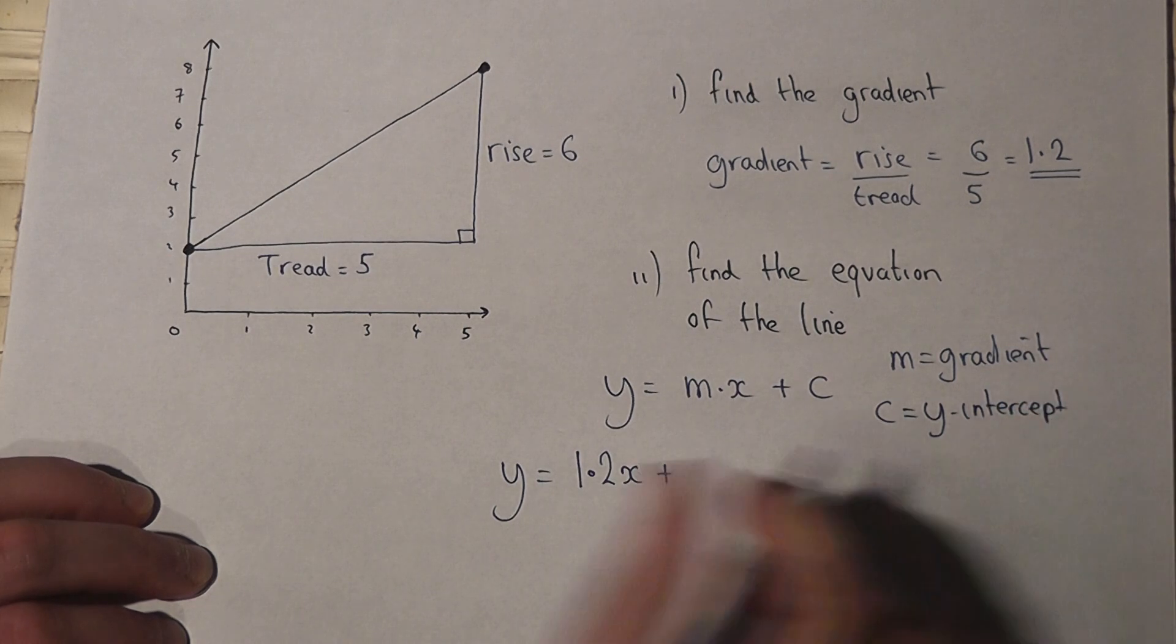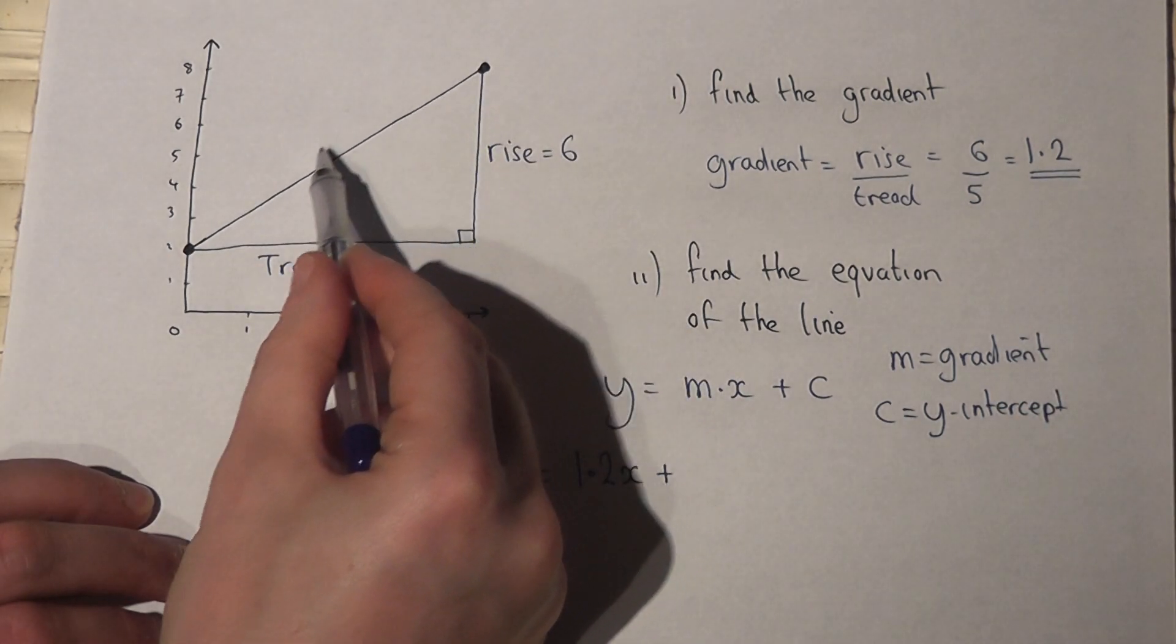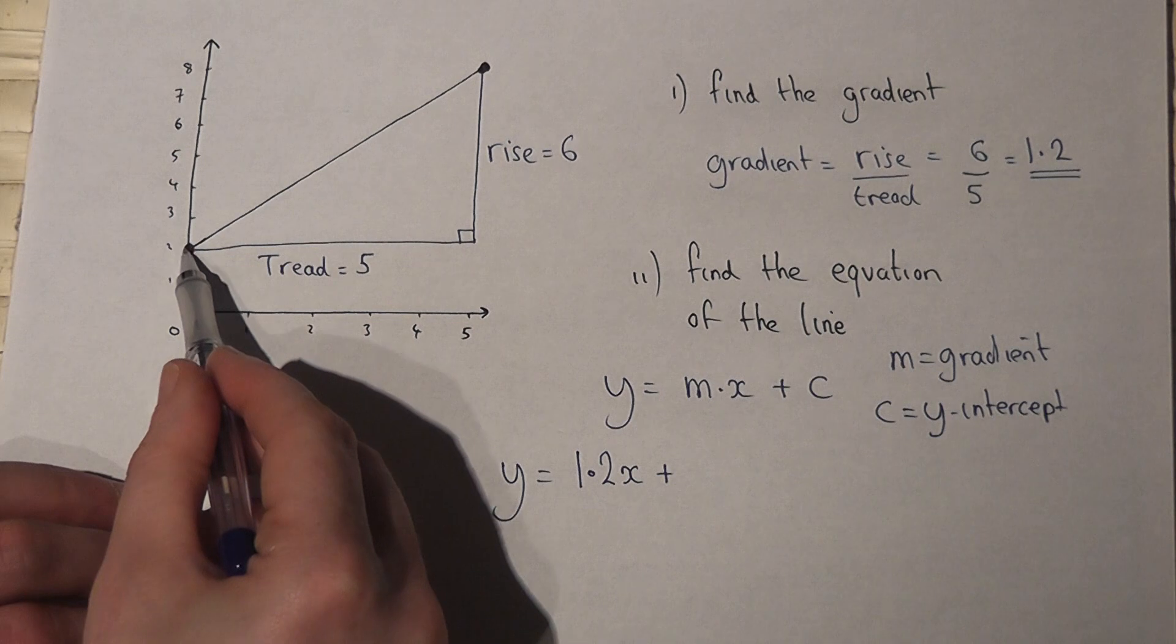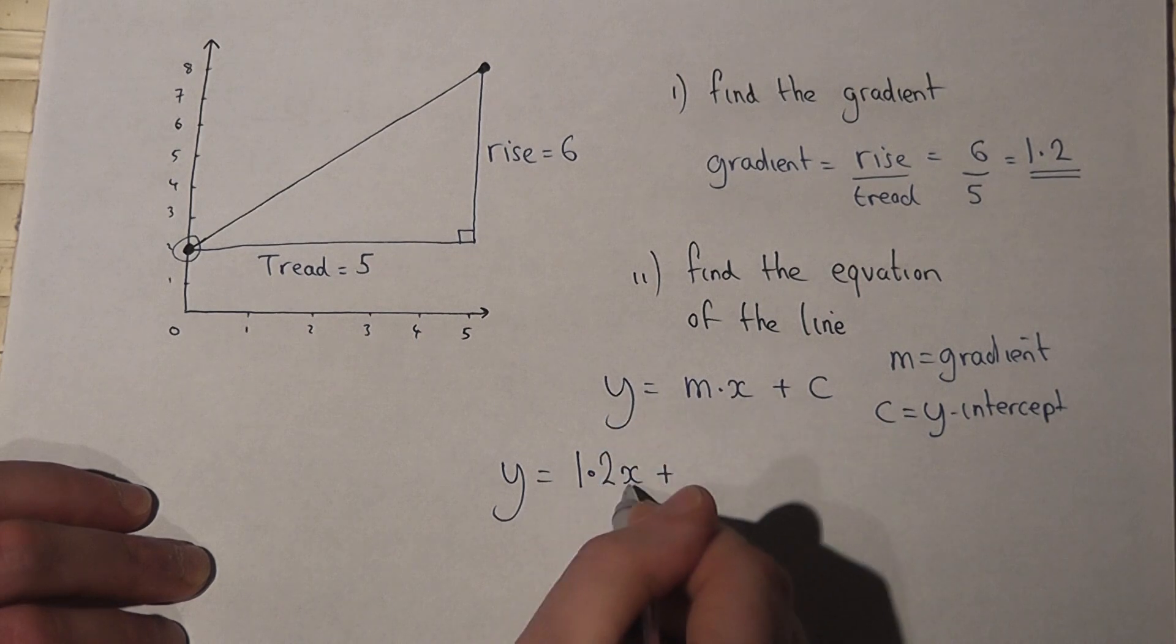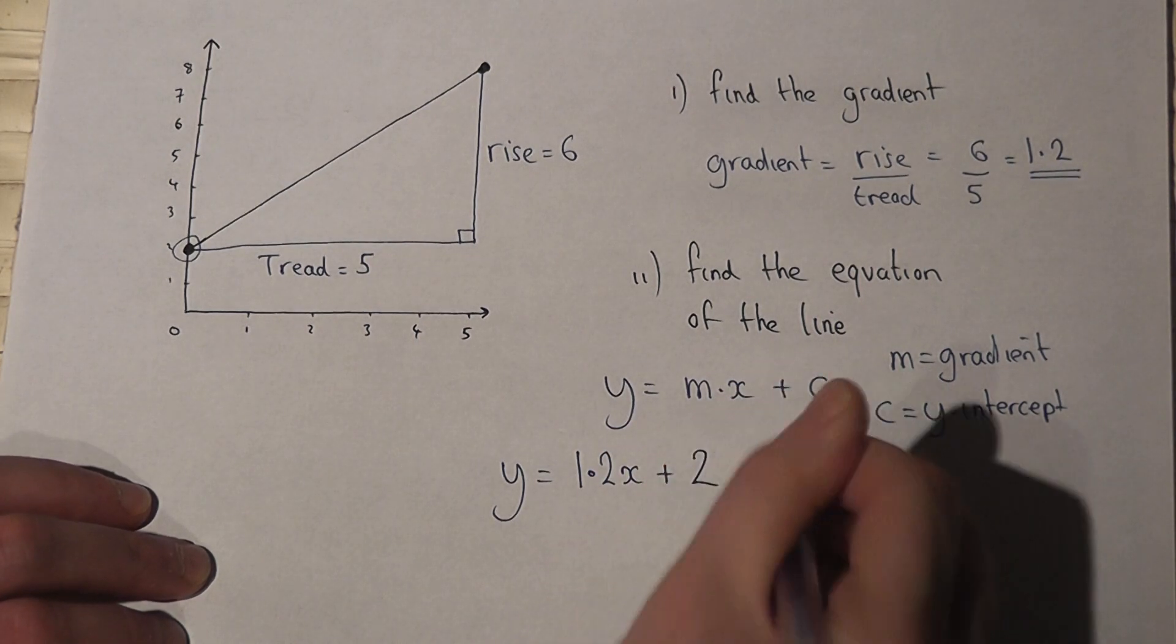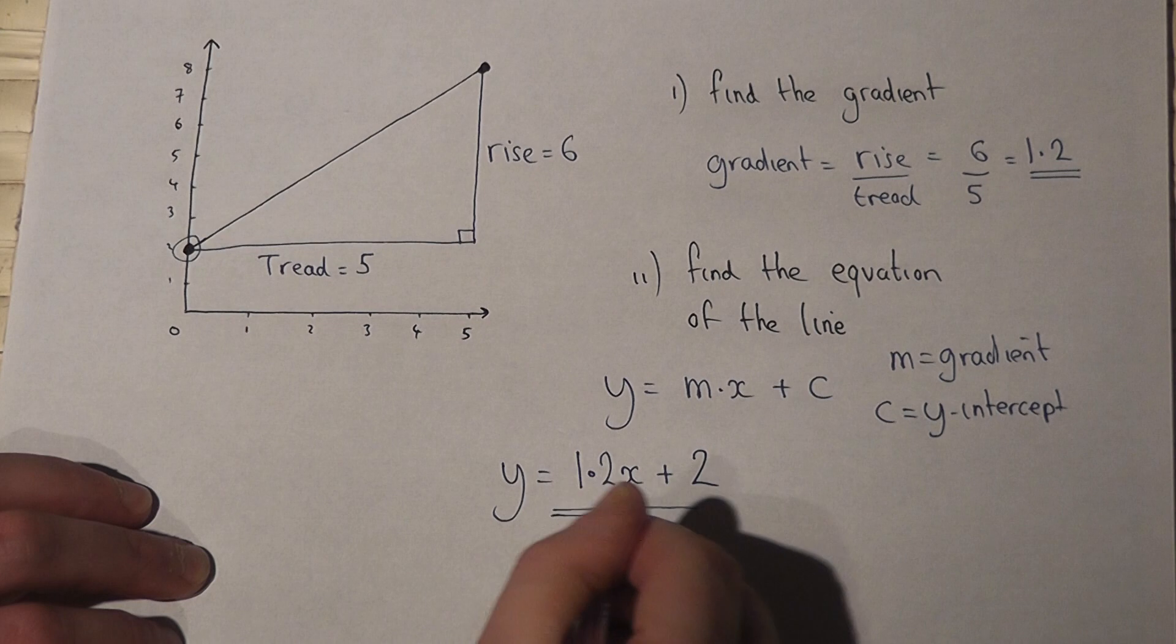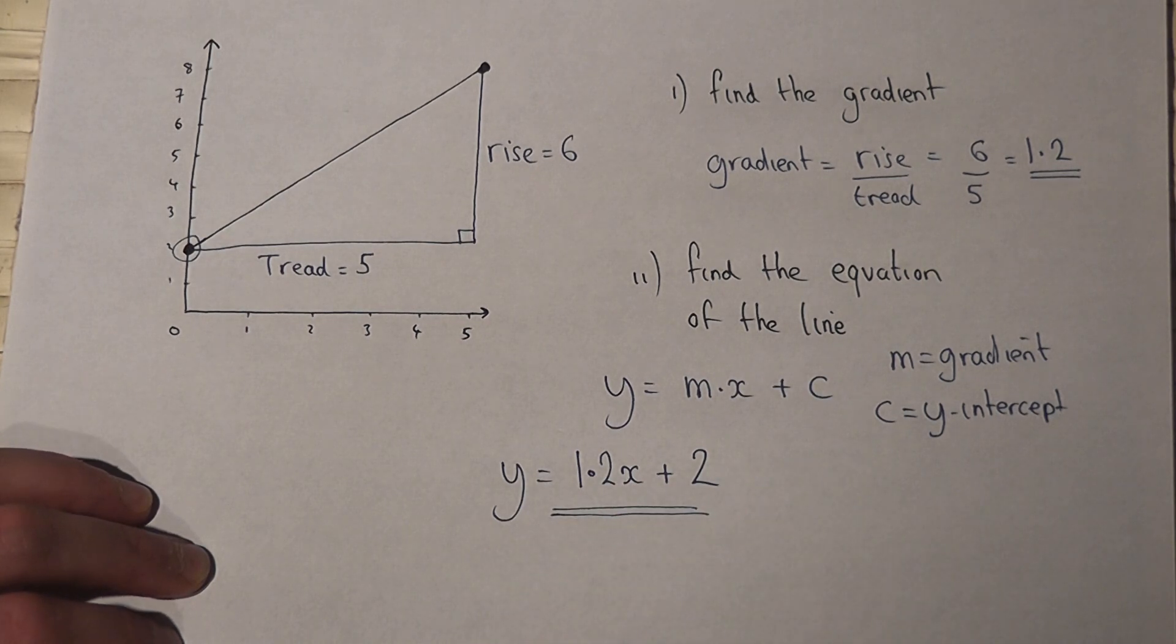Now this is where the line hits the y-axis, which is here. That's 2. So y will equal 1.2x plus 2, and that is the equation of our straight line.